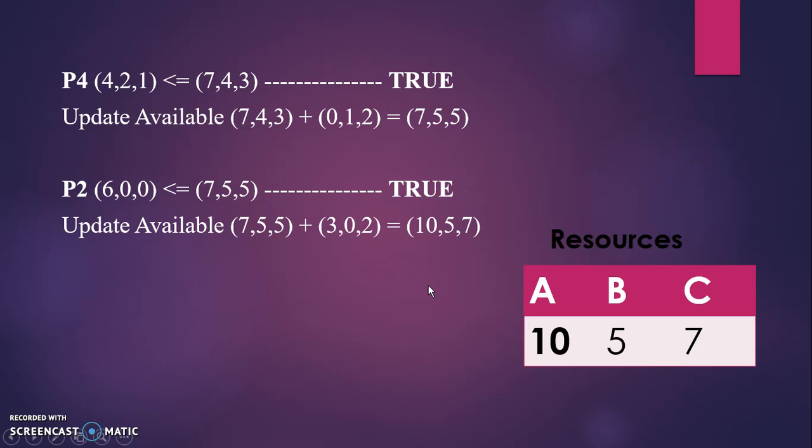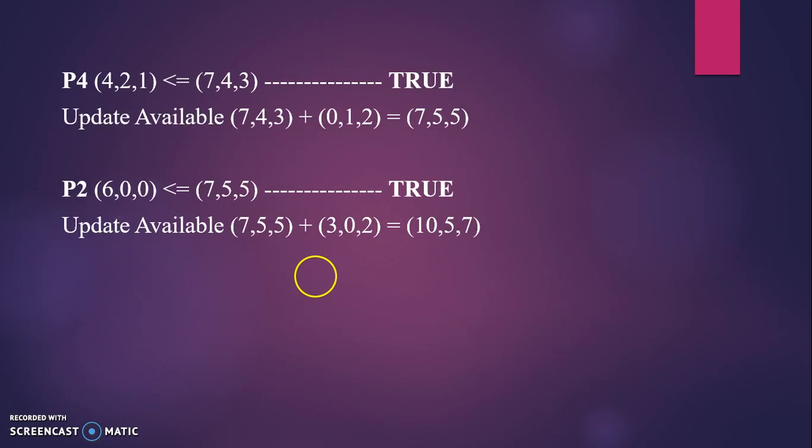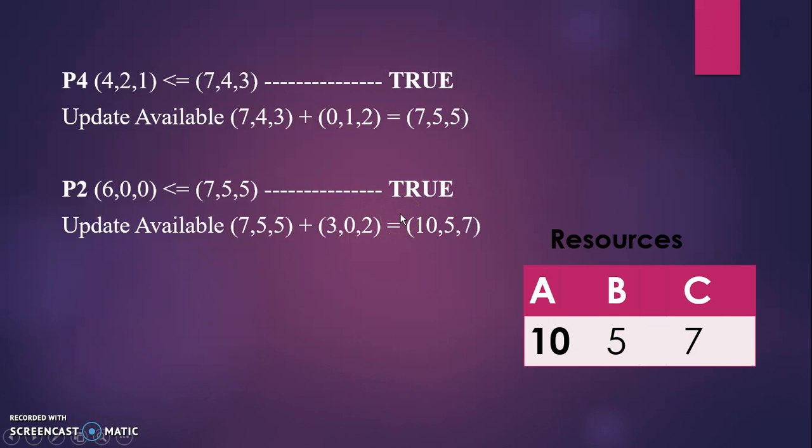Once you've done the step, you have to write the safety state. The safety state is P1, P3, P4, P2. You can ask why I'm skipping P2. The way to write the safety state is you have to follow the statement true: P1 is true, P2 is false initially, P3 is true, P4 is true, then come again P2 is true. Write it down following the true statements: P1, P3, P4, and P2. That's the final answer. Thank you.